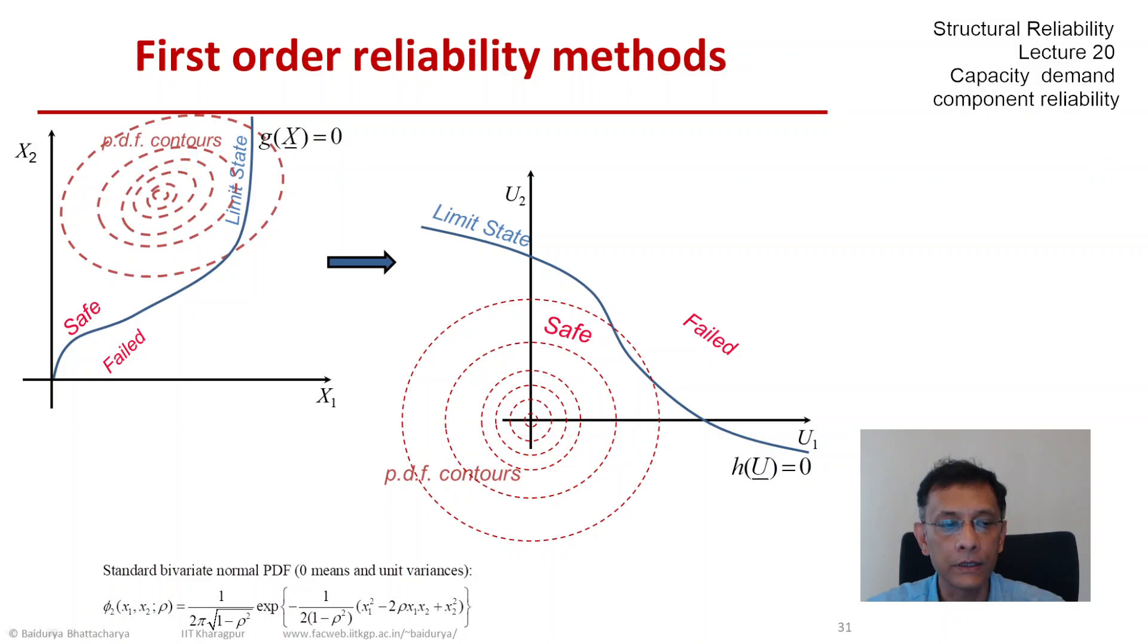Let us look at the bivariate as this example. This is the standard bivariate normal pdf that you see at the bottom of your screen. x1 and x2 are two standard normal random variables with the correlation coefficient rho.